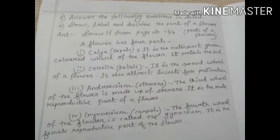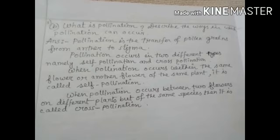Number 3: Androecium, Stamens - The third whorl of the flower is made up of stamens. It is the male reproductive part of a flower. Number 4: Gynoecium, Carpels - The fourth whorl of the flower is called the gynoecium. It is the female reproductive part of the flower.